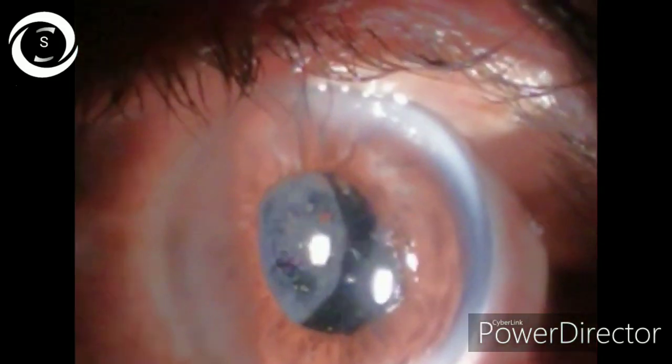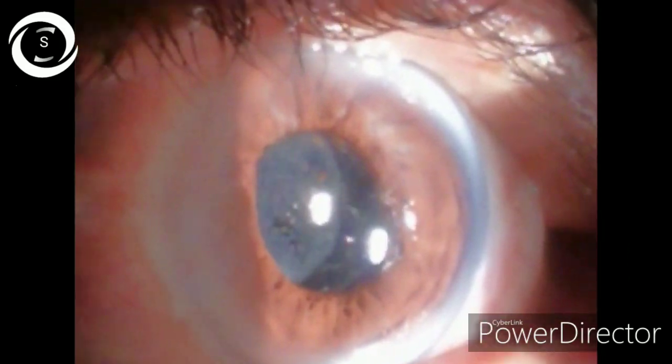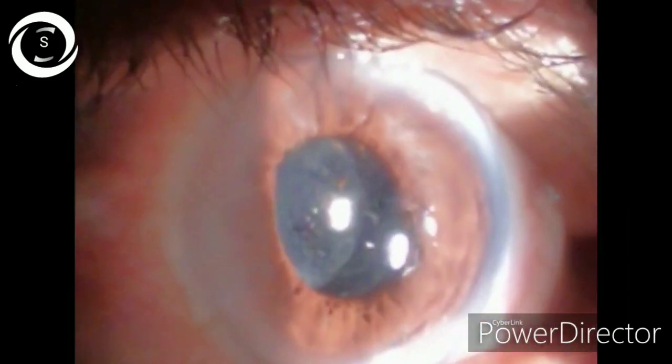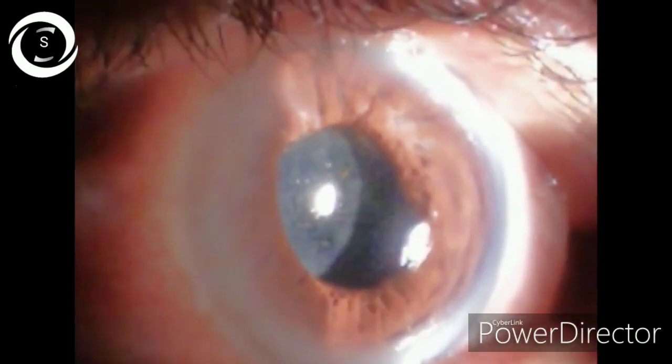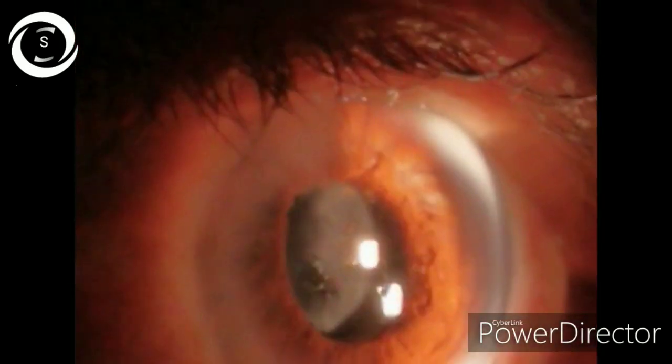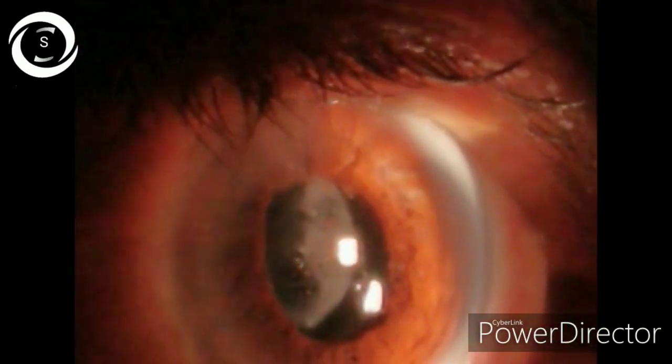Pearl PCO presents as clusters of swollen, opacified, and differentiated lens epithelial cells called bladder or Wedl cells. Mostly PCOs are pearly type.